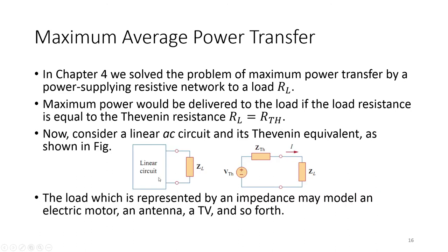For a linear circuit in AC analysis, we use the term impedance ZL because the imaginary part is also noteworthy. In order to get maximum power transfer to the load, we need to find the condition. The whole circuit is simplified with a Thevenin equivalent voltage source and ZTH as the Thevenin equivalent impedance.